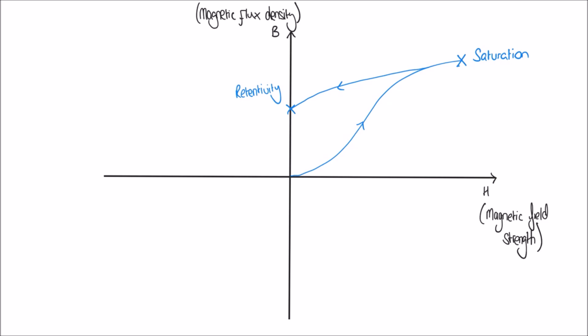Well, let's do that. And so now we find that the magnetic field strength is increasing in a negative direction. I'm bringing the south pole of the magnet, let's imagine, towards those paper clips. And what we find sure enough is that the magnetism, that the magnetic flux density returns to zero. This point here is called the coercivity. It's the amount of magnetic field strength that's required to reduce the magnetic flux density back to zero.